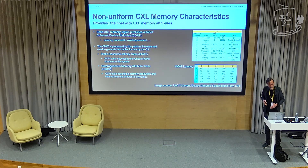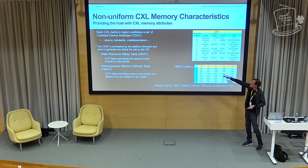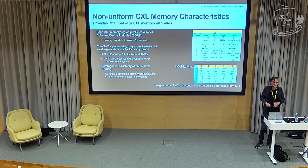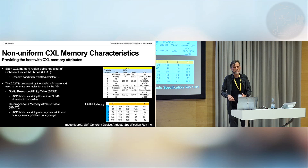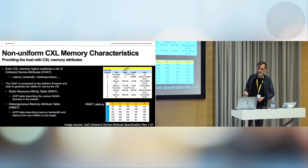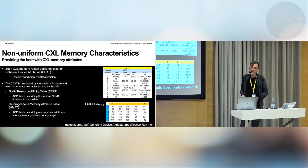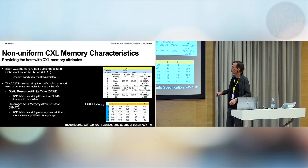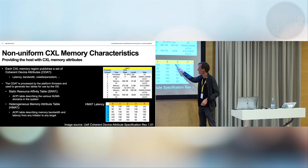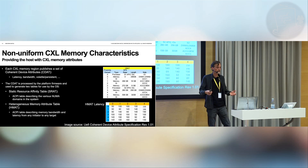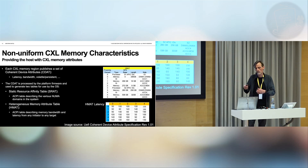The memory doesn't need to be uniform, so the CDAT is processed by the platform firmware to create a couple of tables for use by the operating system. You have the SRAT — the Static Resource Affinity Table — which shows the various NUMA domains in the system, showing accelerators and memory attached at different proximity domains. And then you have the HMAT — the Heterogeneous Memory Attribute Table — which basically shows bandwidth and latency between initiators and targets in the system, used to model the NUMA properties of the system.